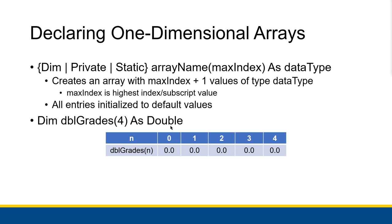For example, if I was creating a procedure-level array called dblDoubleGrades, I give it four as the max subscript number, and use Double as the type. That statement would look like: Dim dblDoubleGrades(4) As Double. It creates an array with five memory locations grouped together all next to each other in memory. All of those memory locations are doubles — at subscript zero we have a double, at subscript one we have a double, and so on, all initialized to 0.0.